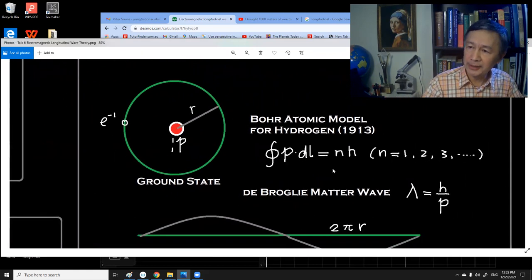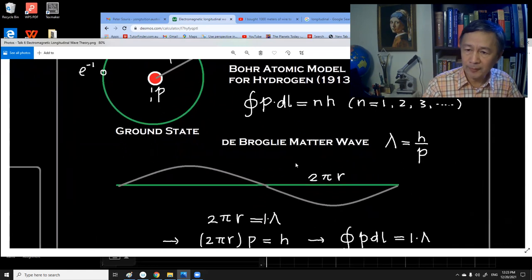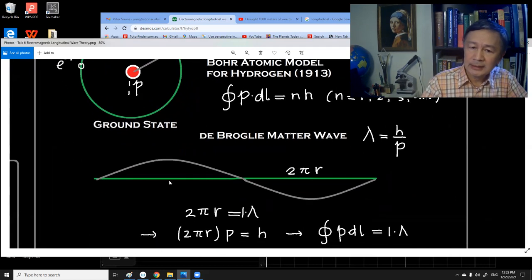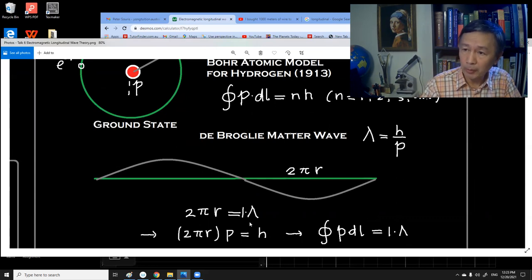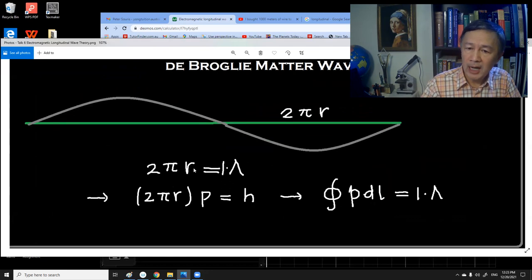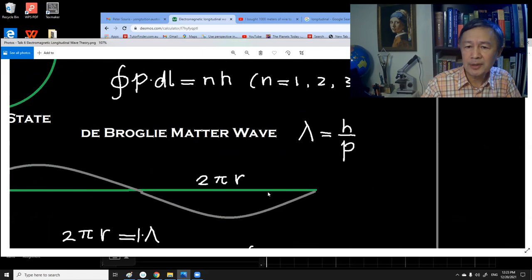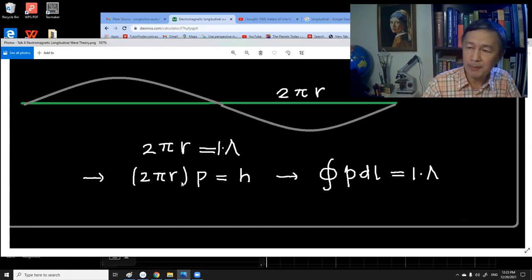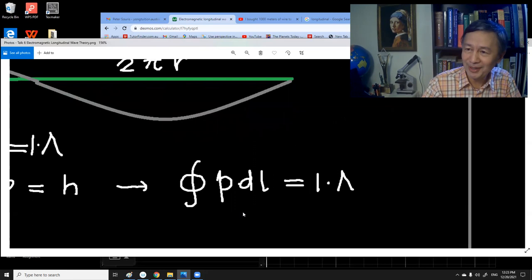In terms of this standing wave, if you expand this circle into this straight line which corresponds to the circumference of the first orbit or ground state, you can see that if you apply the De Broglie wave idea, then the circumference will be exactly equal to one wavelength of De Broglie wavelength. So 2πr equals λ. Substituting the De Broglie formula h over p for λ, we can rewrite this equation as 2πr multiplied by p equals Planck constant. That is why Bohr got this special case.